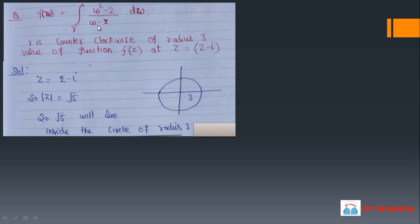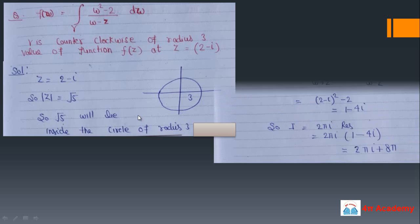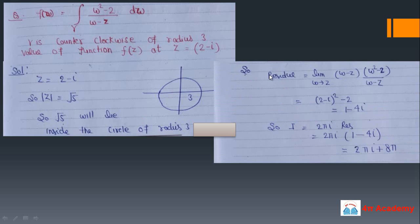To solve this, we need to find the modulus of z = 2 − i, which is √5. Since the contour has radius 3 and √5 < 3, this point lies inside the circle. To calculate the value of this function, we need to find the residue first.